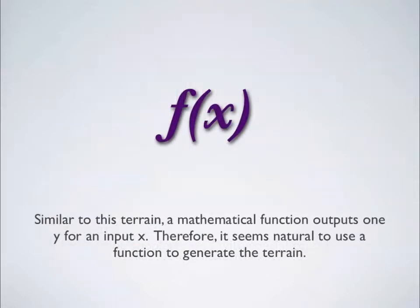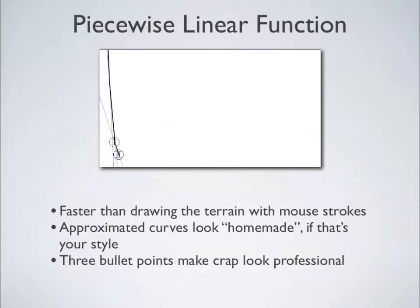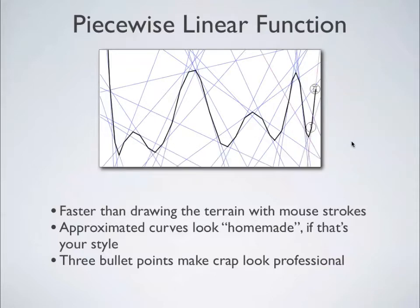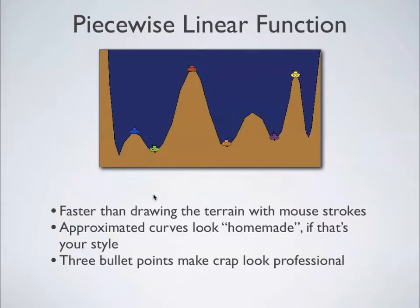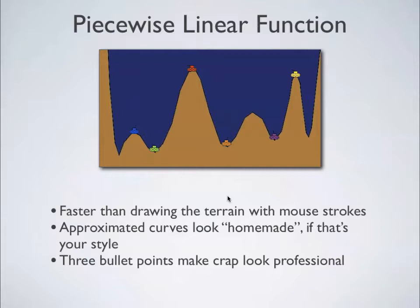Now, since each x coordinate has one y value associated with it, it makes sense to use a function to generate the terrain, because that's the rule of functions. For every x, there's one y. Okay, so what kind of function should we use? Well, the first one I tried was a piecewise linear function, which is a fancy way of saying, you draw a bunch of lines, and then you calculate the slope-intercept form equations. And then you use those equations to generate a single set of y values. It works well enough. Definitely faster than drawing a terrain with mouse strokes. And the approximated curves, well, I'm not real fond of that, but some people might like it. I'd rather have them be truly curved, and look really natural.